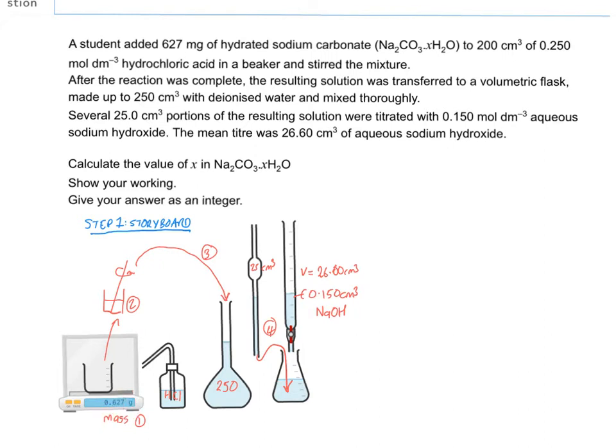So as you can see here we've got our 627 milligrams of sodium carbonate. We've converted that into our mass and that's been weighed out on a top pan balance. So the second thing is we take that and we dissolve that 0.627 grams of sodium carbonate, hydrated sodium carbonate, into 200 centimeters cubed of hydrochloric acid which has a concentration of 0.25 moles per dm cubed.